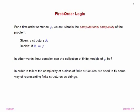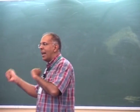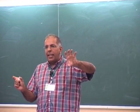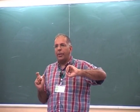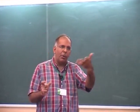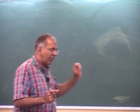We can ask: what is the computational complexity of the problem — given a structure A, deciding if A satisfies a sentence phi? In other words, how complex is the collection of finite models of phi? I should say something about finite models because the title of this workshop is finite and algorithmic model theory. If you fix phi, you give the structure A and want to decide whether A is a model of phi; phi has to be presented in some particular way, and Ramanujam talked a lot about encoding it as a string.